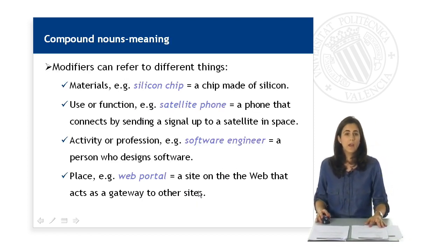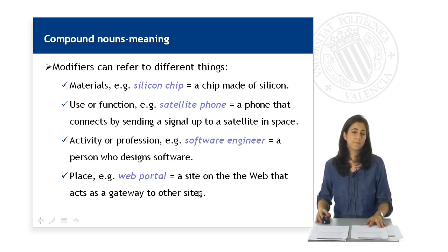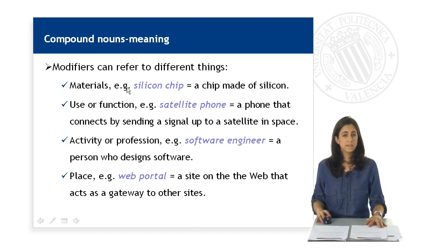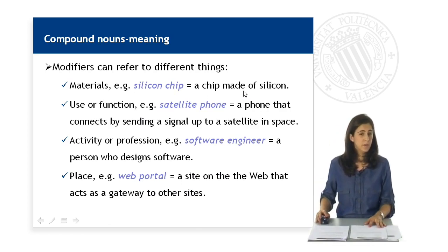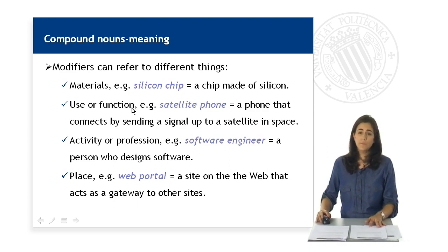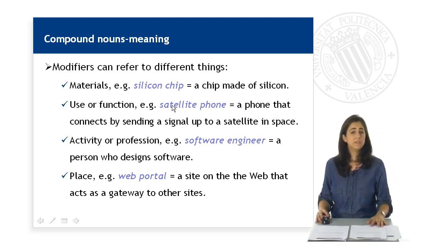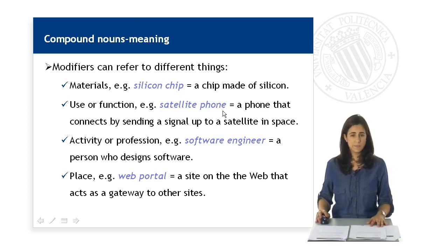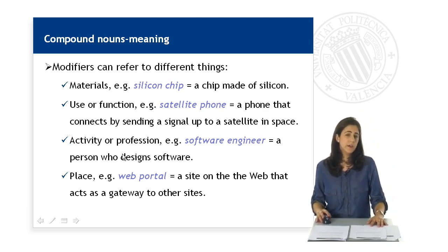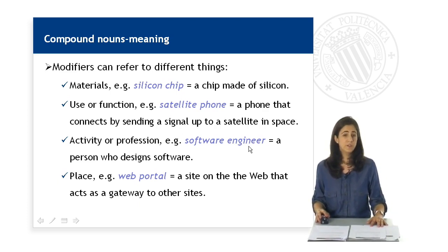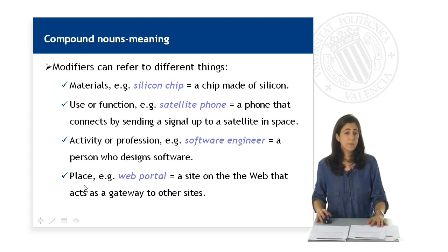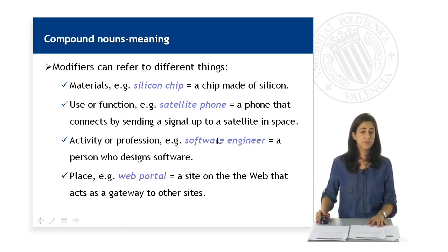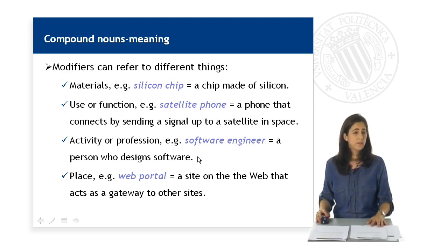As to their meaning, modifiers can refer to different things. They can refer to materials, as in 'silicon chip,' which is a chip made of silicon. They can refer to use or function, as in 'satellite phone,' which is a phone that connects by sending a signal up to a satellite in space. They also can convey activity or profession, as in 'software engineer,' which is a person who designs software. They also mean place, as in 'web portal,' which is a site on the web that acts as a gateway to other sites.